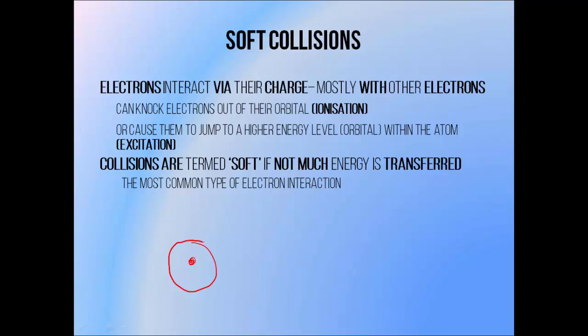Most electron interactions happen like this: a high energy electron passes a fair distance away from an atom, but its charge causes it to interact and push against a similar charge of a bound electron. The electron may be pushed out of its orbital, resulting in ionization, but in this case it doesn't go very far and doesn't cause much ionization in the surrounding material. There is not much energy transfer because the high energy electron passes some distance from the atom, and the force of interaction depends on the distance between the two things that are interacting. The atomic electron may also remain bound to its atom and simply be lifted to a higher energy level as an example of excitation. Because there is not much energy transfer involved in this collision, it is termed a soft collision.